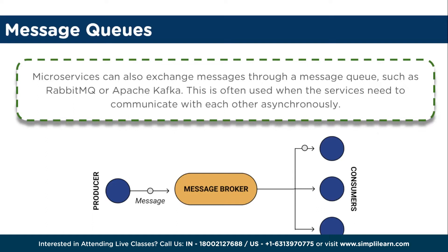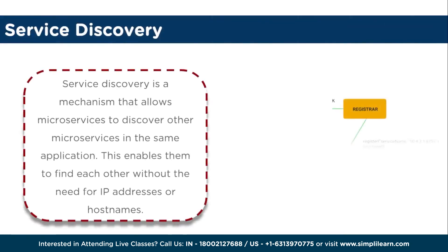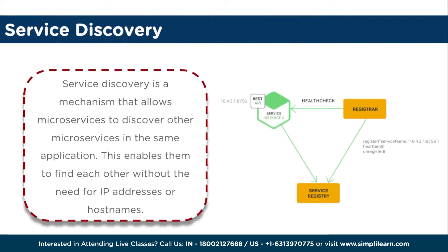The second is messaging queues. Microservices can communicate asynchronously through messaging queues — one microservice can publish messages to a queue, and other microservices can consume those messages. This decouples the services, allowing them to operate independently. Popular messaging systems include RabbitMQ, Apache Kafka, and ActiveMQ.